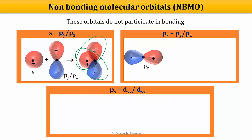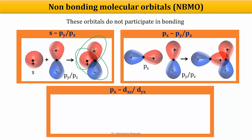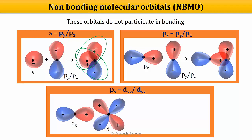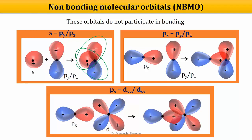Similarly, when two P orbitals combine: if they are parallel to each other we get pi molecular orbitals, and if they approach along the internuclear axis we get sigma molecular orbitals. But the third possibility is when the two P orbitals are perpendicular to each other — this results in a non-bonding molecular orbital. Another possibility is when a P orbital combines with a D orbital in a configuration where the effects cancel, again giving a non-bonding molecular orbital.